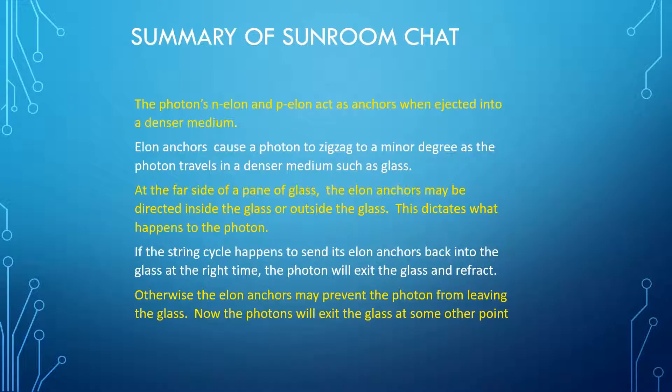If the string cycle happens to send its elon anchors back into the glass at the right time, the photon will exit the glass and refract. Otherwise, elon anchors may prevent the photon from leaving the glass. Now the photon will exit the glass at some other point.